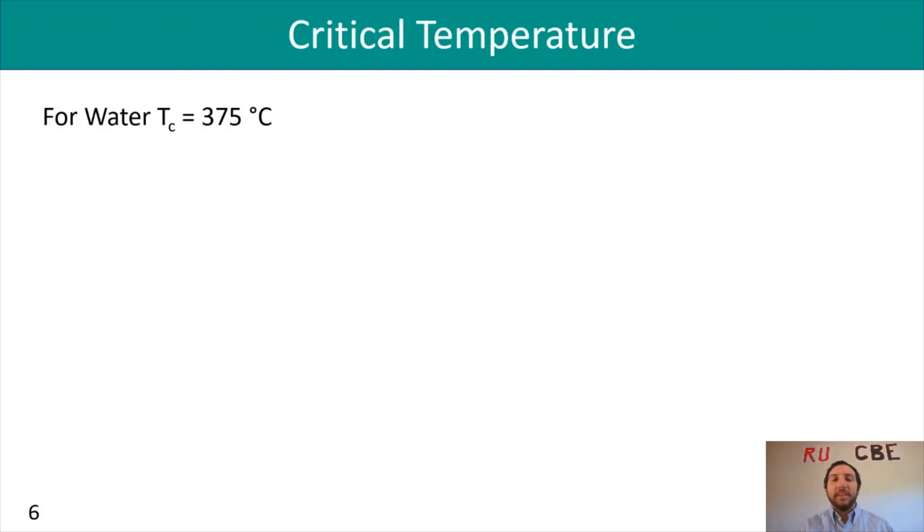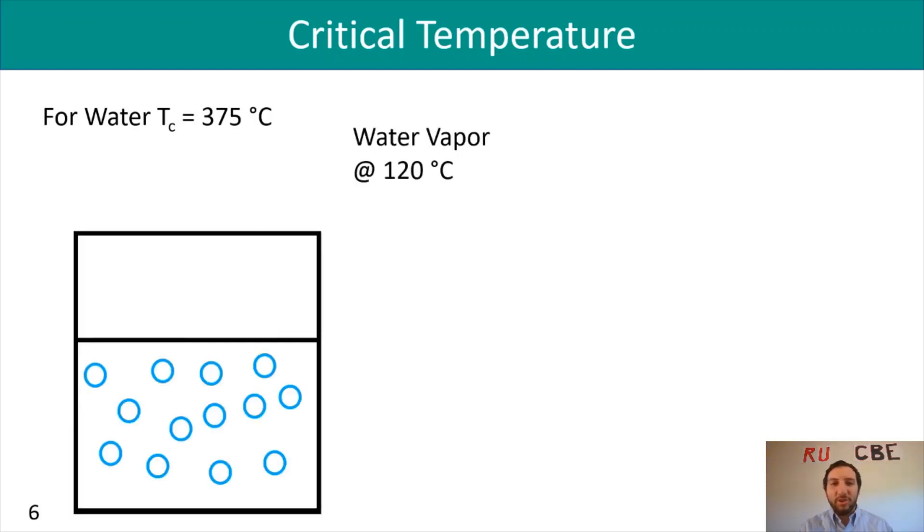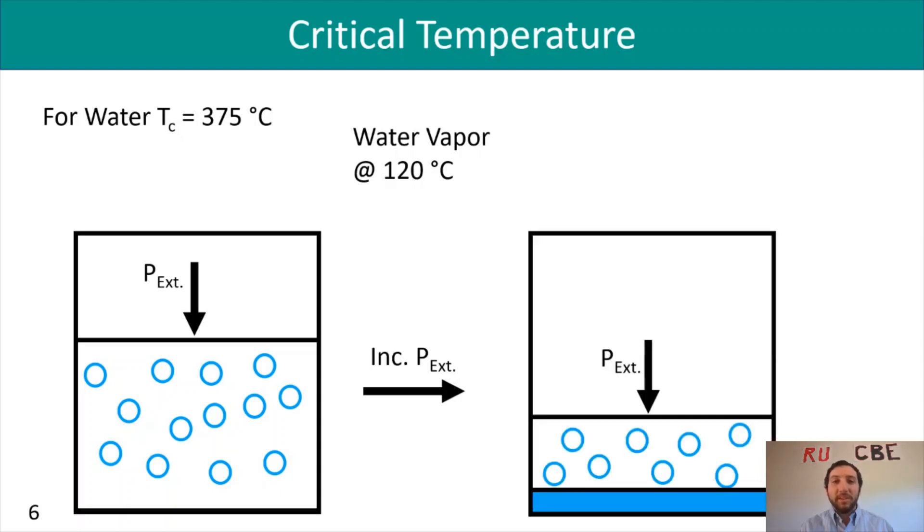For water, the critical temperature is 375 degrees Celsius. If I had water vapor and I had a jar with some water molecules in it, I applied an external pressure and at the same temperature just increased my pressure, what ended up happening is that because I increased my pressure, I'm going to get some water to form. In that case, we have my vapor at a temperature less than the critical temperature, and therefore I can condense this into a liquid phase isothermally, so at the same temperature.